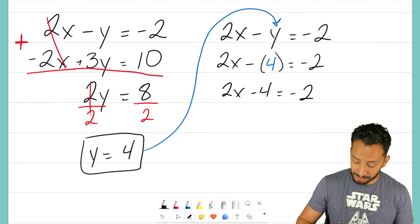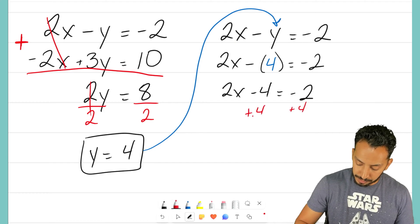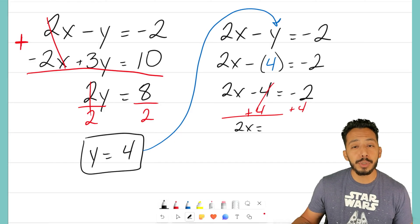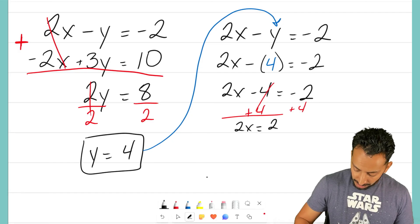I'm going to go ahead and add 4 to both sides. Doing that, we'll end up with 2x equaling, let's see, negative 2 plus 4 will be a positive 2.